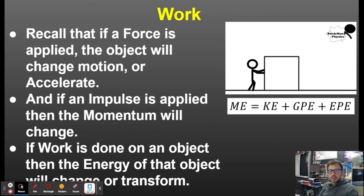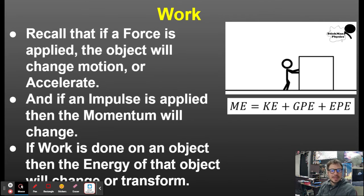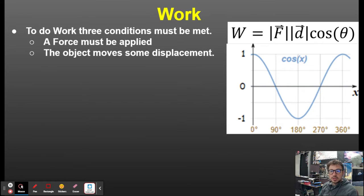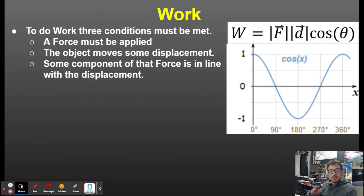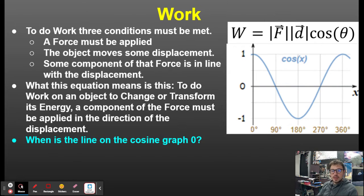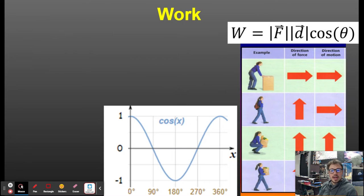If we look at work, we know that work is done on objects, and the energy of that object will change or transform — something's happening to the energy of that object. In order for work to be done, three conditions must be met: number one, a force must be applied; number two, the object moves some displacement; and some component of that force is in line with that displacement, so some part of that force causes that energy to change or transform. That cosine function is just going to tell us whether work is going to be positive, zero, or negative.